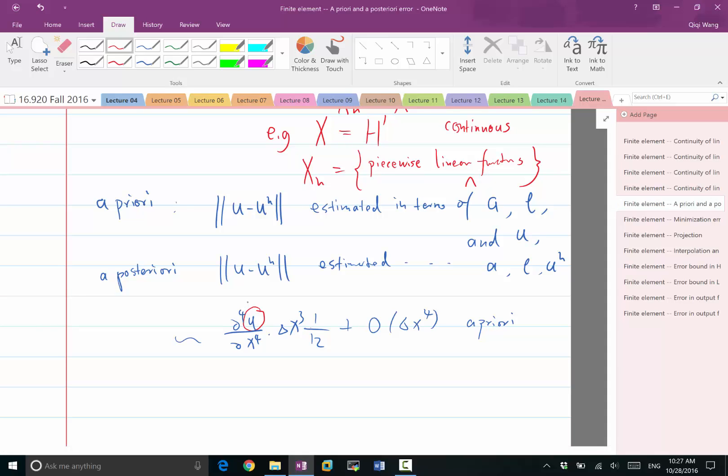A posteriori is a lot more difficult to derive, but it's a lot more useful also because we should be able to compute the error estimate not from the U, but from the actual discrete solution.